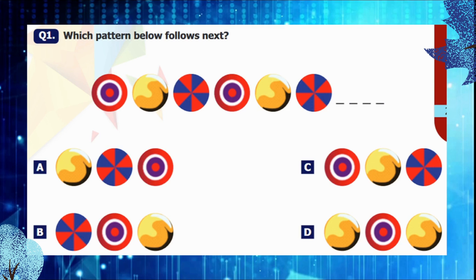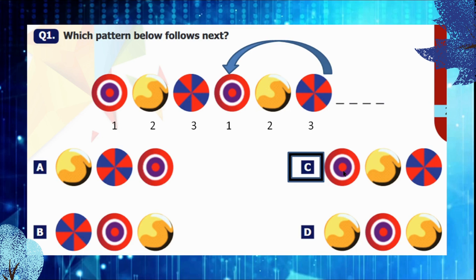Question 1: Which pattern below follows next? So here we can see three types of circles are given to us which are repeating again in the same way. After the third one, the first is going to come back again. If we look at all our options, C is the appropriate one which is repeating in the same sequence and that is going to fit into our pattern. So C is the answer.